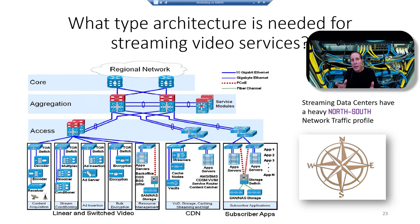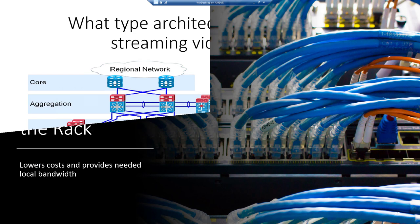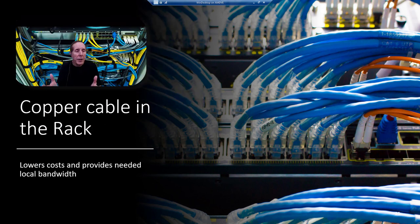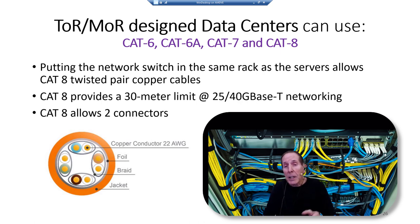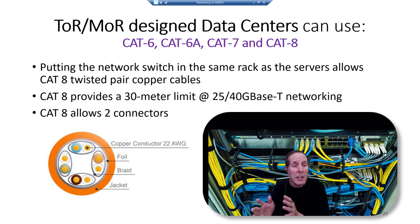What about Netflix, Hulu, or Amazon Prime streaming video services? They don't use spine-leaf because streaming is all north-south traffic, not east-west. This is a typical Cisco design for a streaming video service data center. Using copper or twisted pair cabling in a rack lowers cost while still providing high bandwidth. With a TOR-designed data center, you can still use CAT 6A, CAT 6, CAT 7, or CAT 8. CAT 8 is growing in data center use — it provides 30 meters at 25 or 40 GBase-T networking and allows up to two connectors between ends.